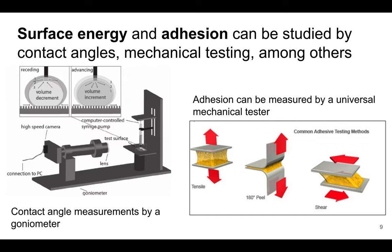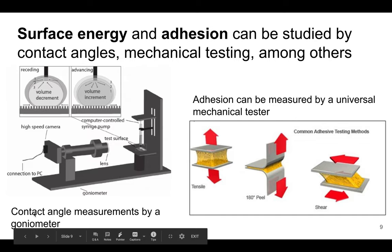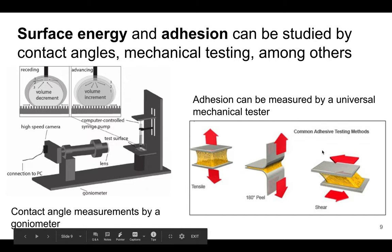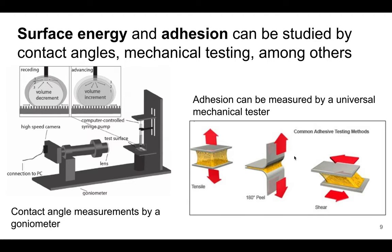Surface energy — you could also throw in adhesion studies. The contact angle, where you look at the angle of a droplet on a surface, is measured with a goniometer. For adhesion, whether you're looking at tapes, glues, or other types of adhesives, a common test exposes the adhesive to a tensile peel or shear-type test to measure that strength. These would all obviously be dependent on the surface structure of that interface.